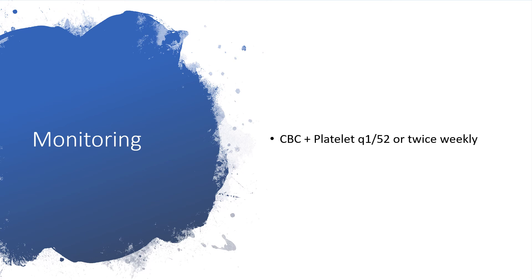Monitoring: we have to monitor complete blood count and platelets every week or twice weekly. A peripheral smear is preferable, and we ask for all parameters, particularly when we know we might be dealing with pancytopenia and megaloblastic anemia.